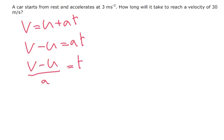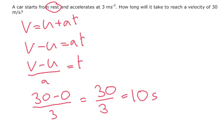So let's put some numbers in. So final velocity is 30 minus 0 because it started from rest and A is 3. So we've got 30 divided by 3, which is 10 seconds. So that's our final answer. T equals 10 seconds.